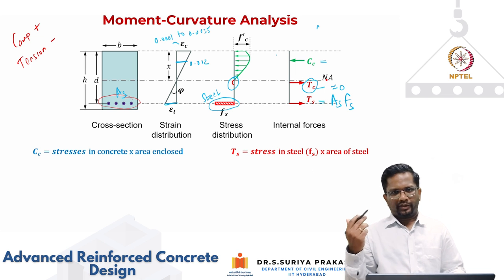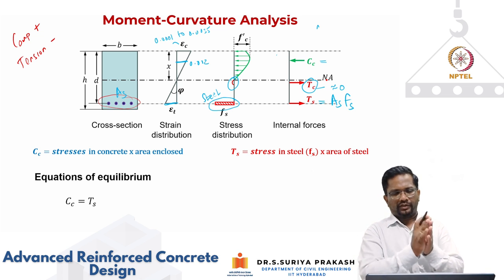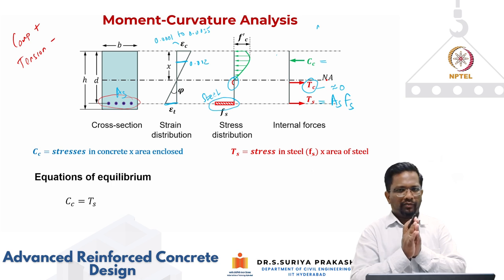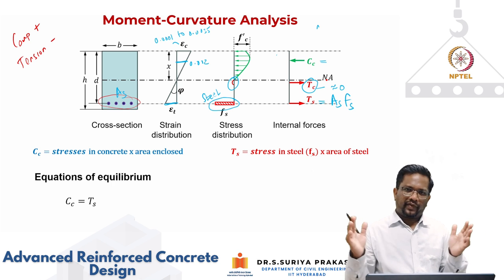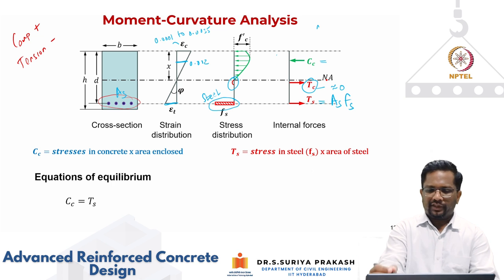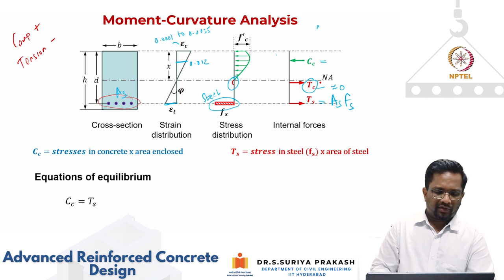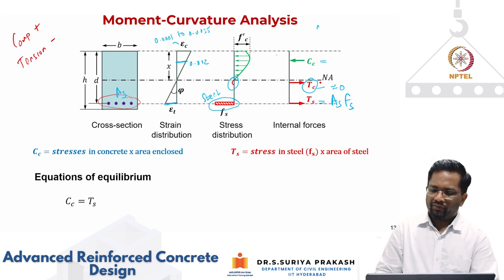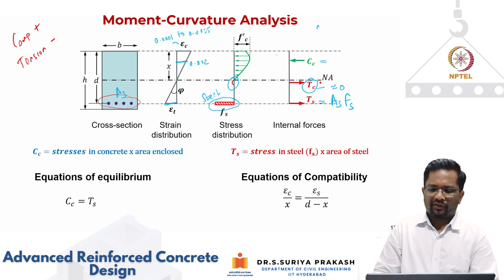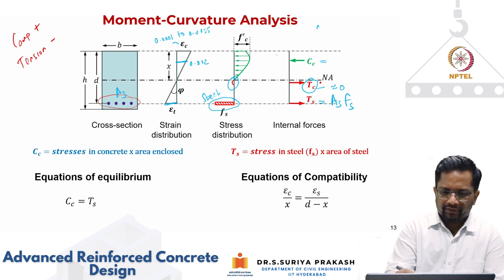CC is basically stress in the concrete multiplied by the enclosed area, and TC is taken as zero. The forces have to be in equilibrium. We are dealing with a beam with no axial force, so CC should equal TS. From the equations of compatibility, we know that strain distribution is linear, and from similar triangles: epsilon_c divided by x equals epsilon_s divided by (d minus x), where epsilon_s is the strain in the tension steel. This comes from the plane sections remain plane assumption.